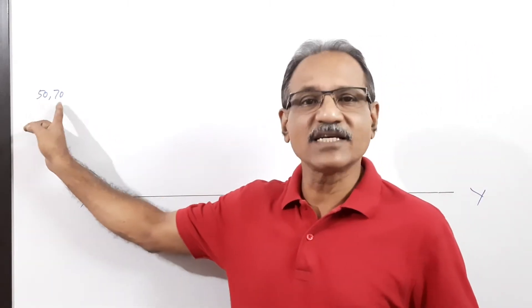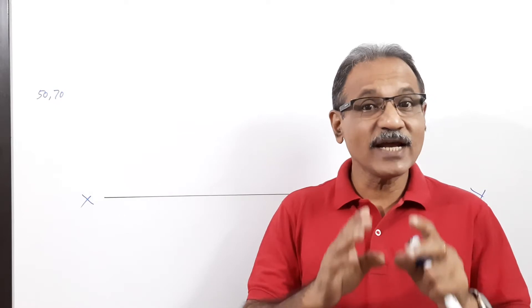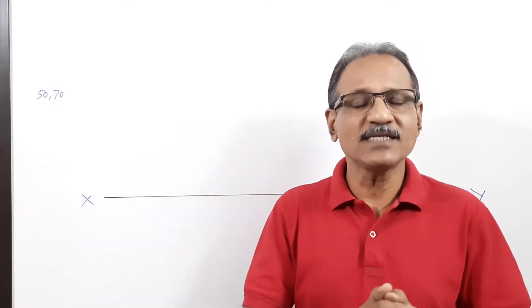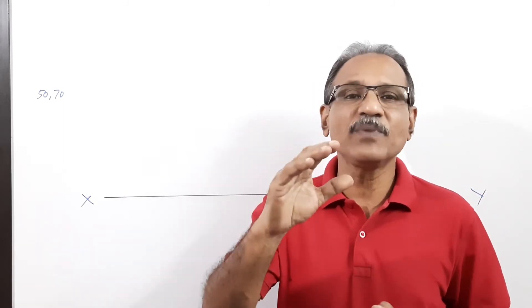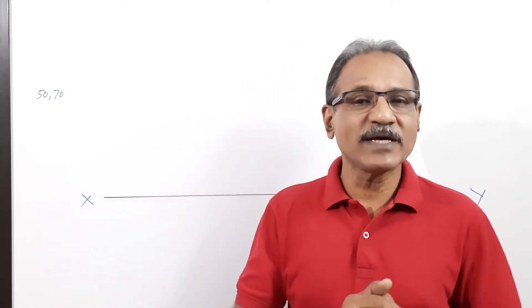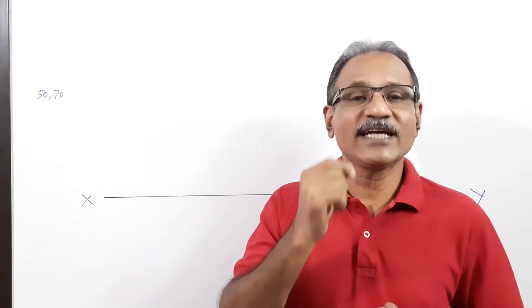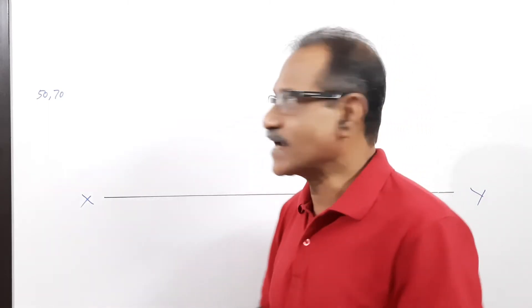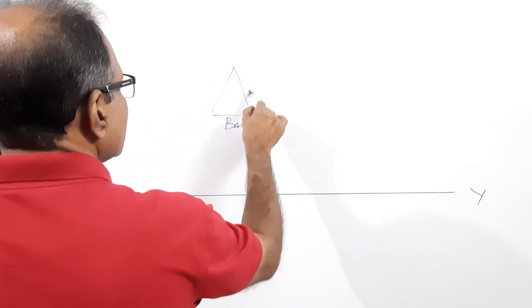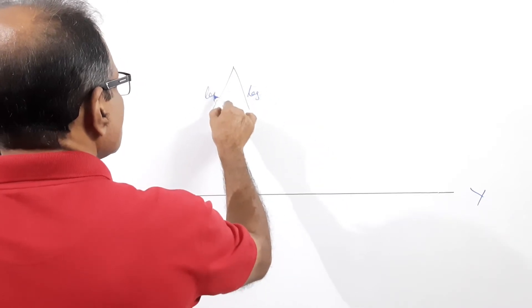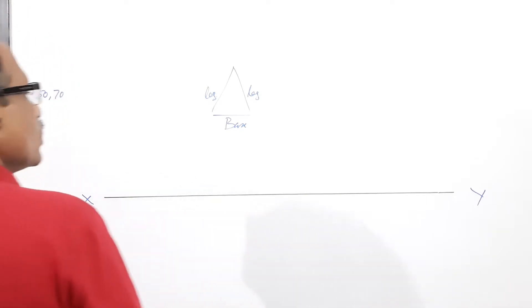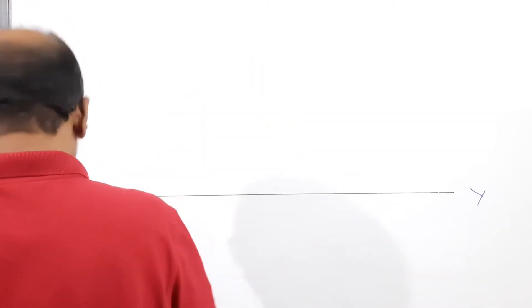The question is: an isosceles triangular lamina with 50 mm base and 70 mm altitude rests on VP on its base with a leg on HP. For an isosceles triangle, the bottom side is called the base and the two equal sides are called the legs.